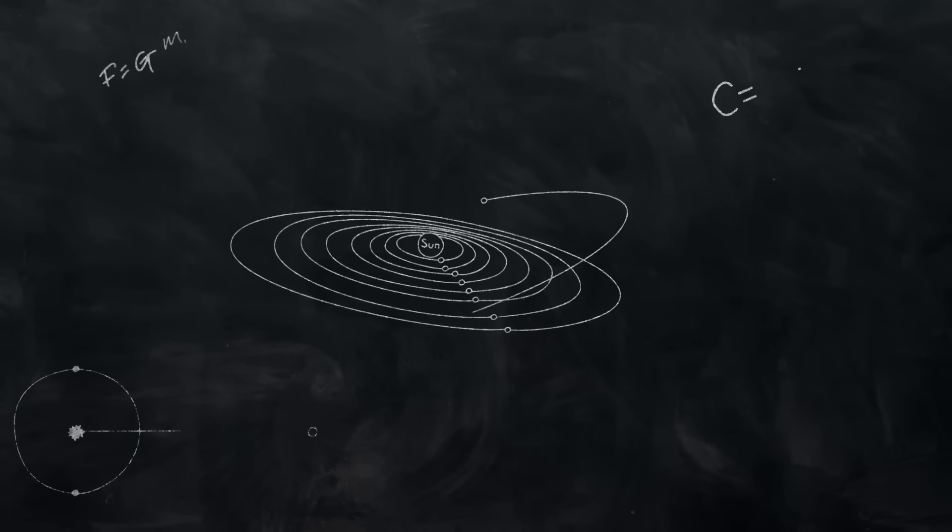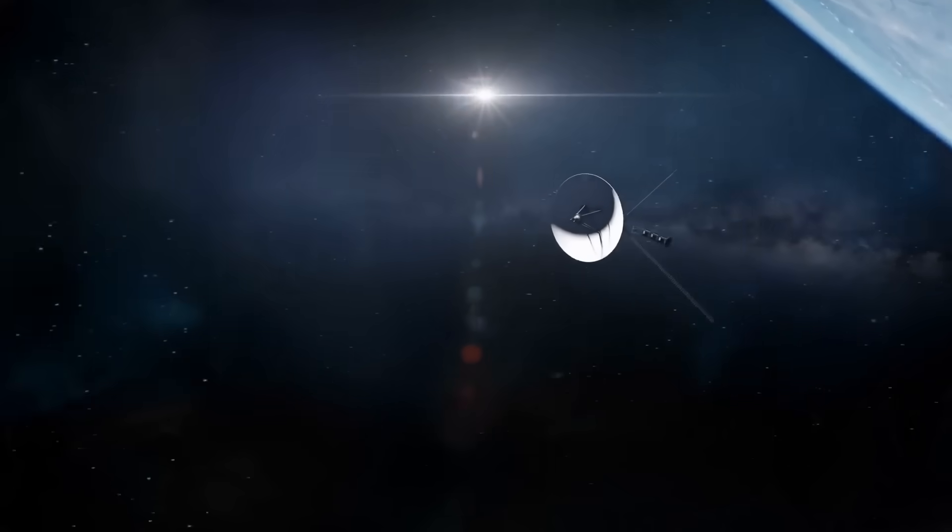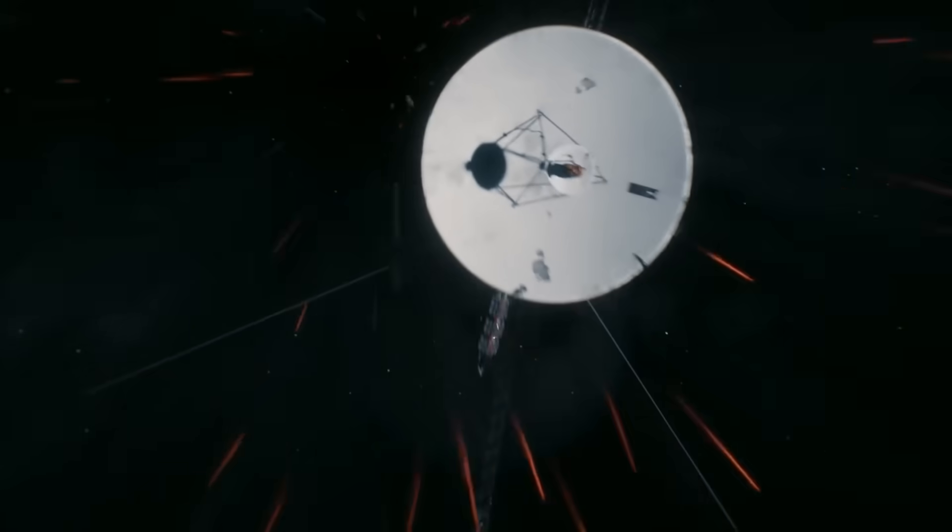This means that what we call interstellar space may not begin where we think it does. The discovery is not a new object. It is the realization that our categories are artificial. Voyager 1 didn't just cross a boundary. It exposed how poorly defined that boundary really is.